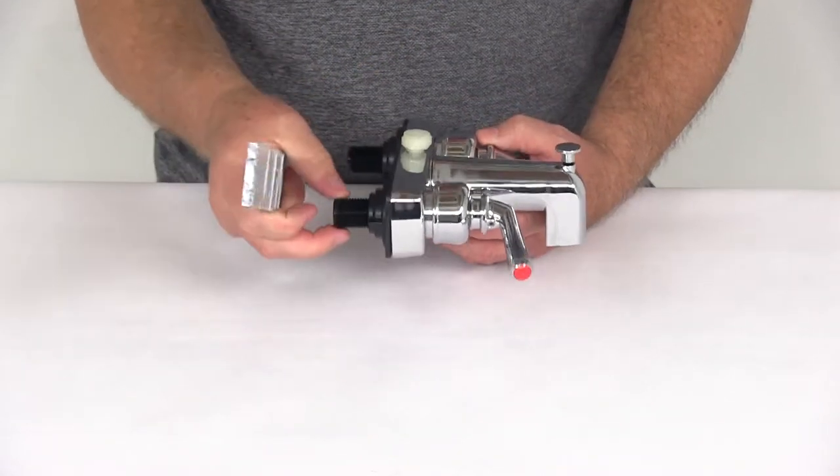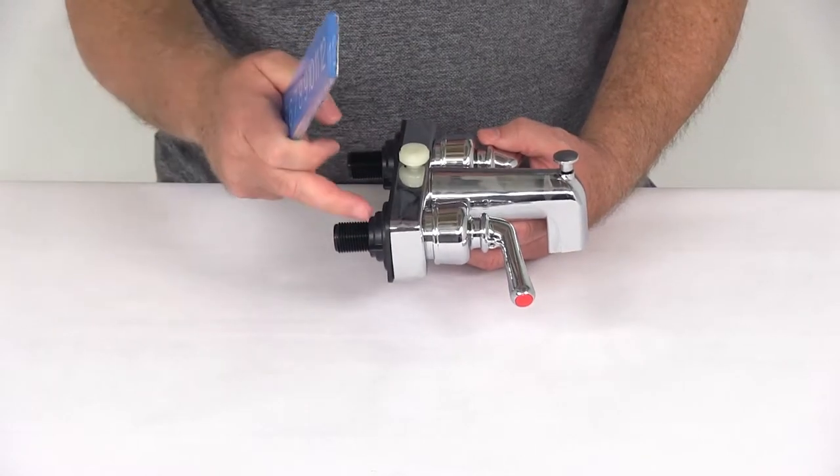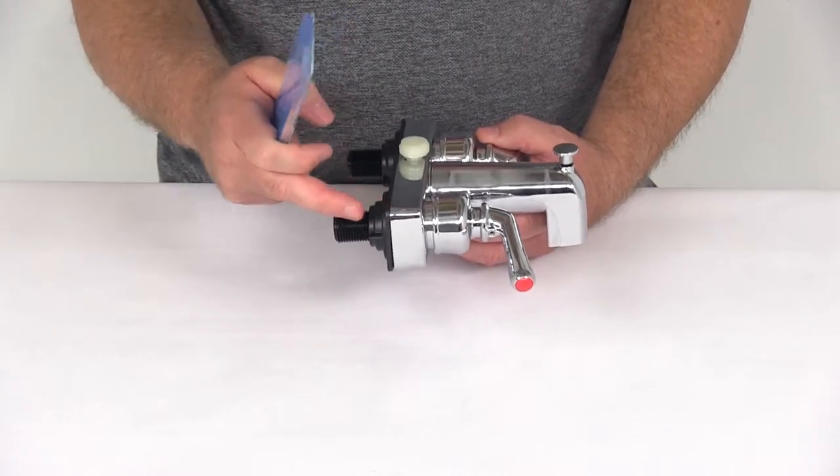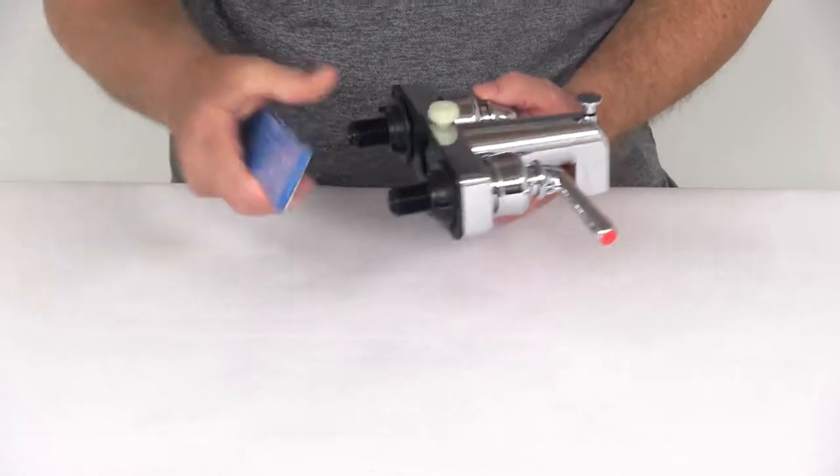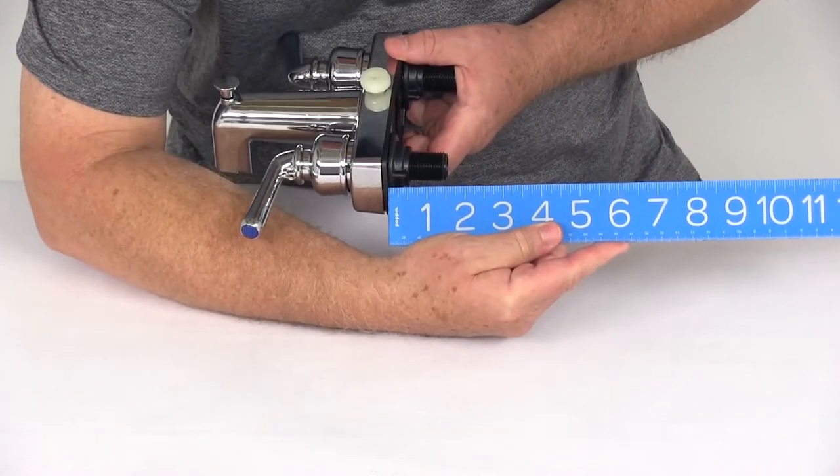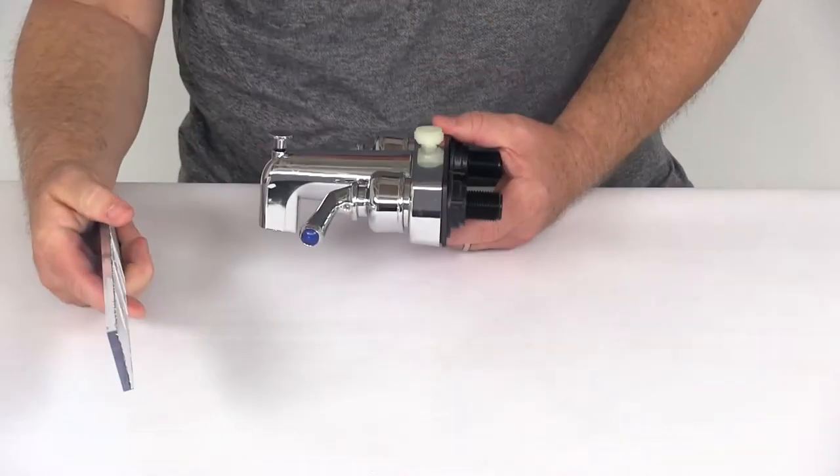The threaded shank portion that connects to your water supply from the very back of the base to the edge measures right at one and a half inches for the shank length.